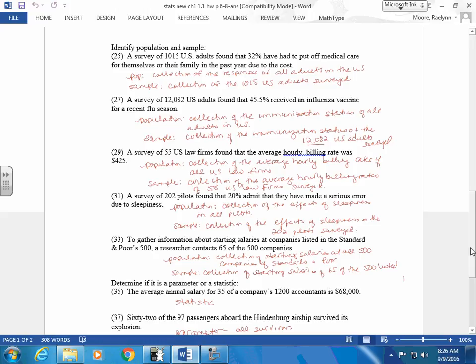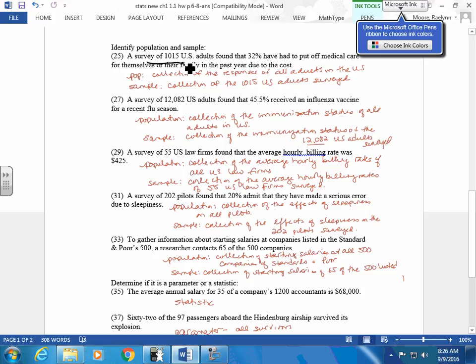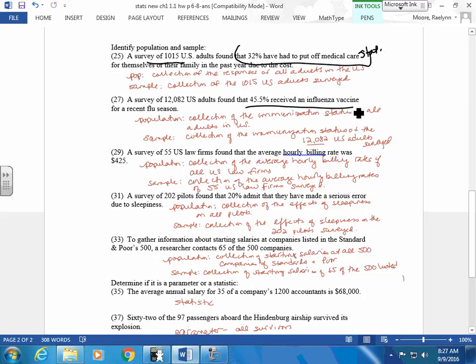A survey of 1,015 U.S. adults found that 32% have had to put off medical care for themselves or their family in the past year due to the cost. So this is the number you're starting with. Are there more than that many U.S. adults in the United States? So this is a sample. The collection of the 1,015 U.S. adults that they surveyed. The population comes from all U.S. adults in the United States. This is the information that comes from here. Because it's related to a sample, is this a statistic or a parameter? A statistic.